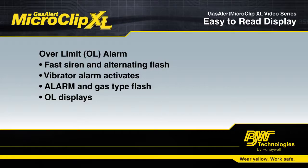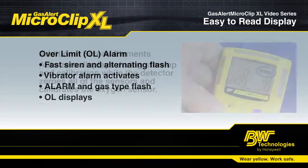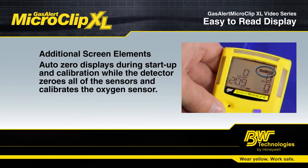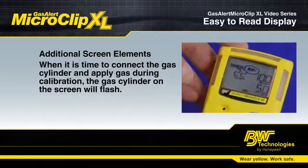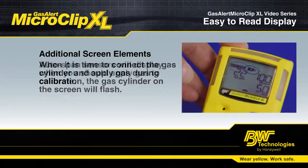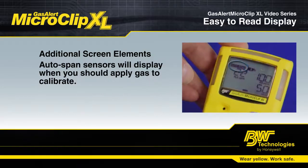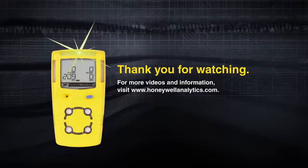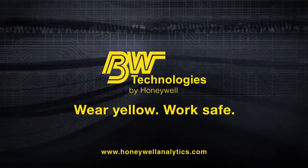Always confirm proper sensor function following an OL alarm. Other easy-to-identify icons and prompts you will see on your screen include Auto Zero, the Gas Cylinder icon, and Autospan. The Gas Alert Micro Clip XL has an easy-to-read display and easy-to-interpret information. We've covered the basic elements of your screen. For more information, check out the user manual.